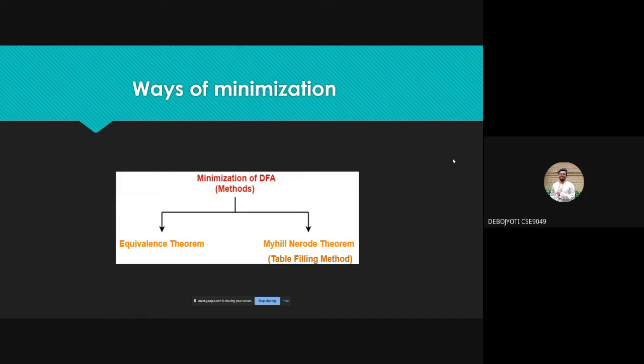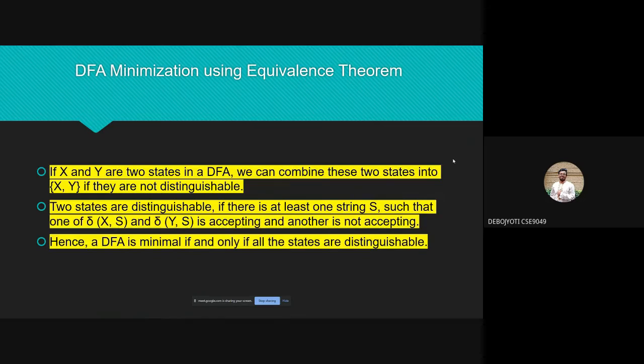There are several ways of minimization. Two ways are basically used in very widespread ways: equivalence theorem and Myhill-Nerode theorem. DFA minimization using equivalence theorem works as follows: if X and Y are two states in a DFA, we can combine these two states into X and Y if they are not distinguishable. Two states are distinguishable if there is at least one string S such that one of delta XS and delta YS is accepting and another is not accepted.